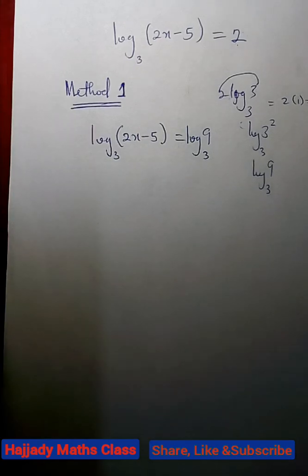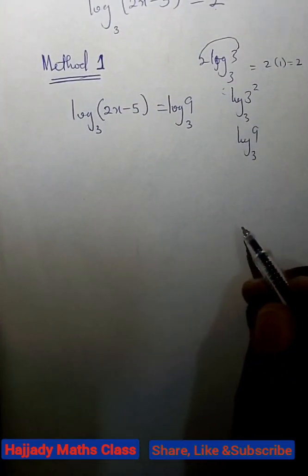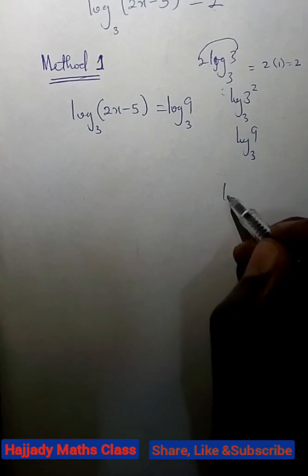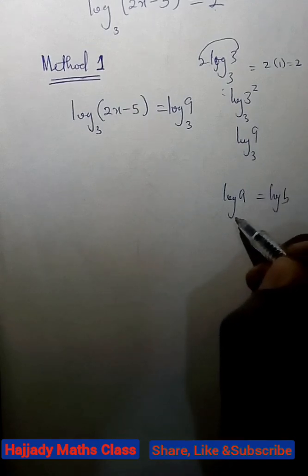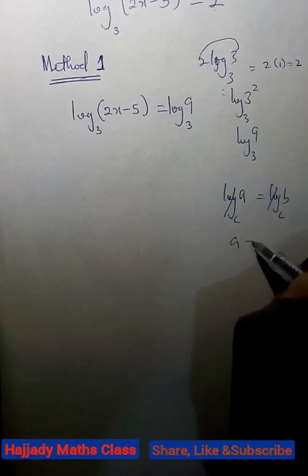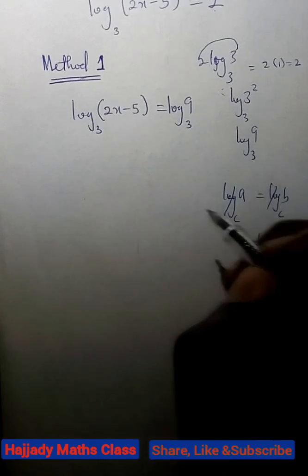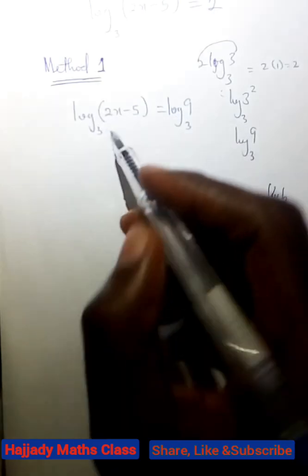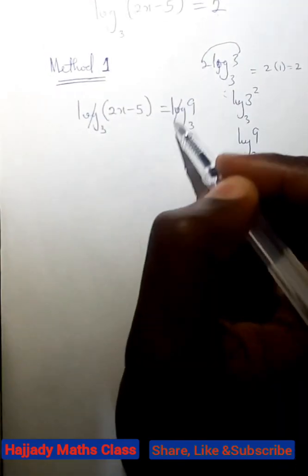Now, in solving this further, from the law of logarithms, it says that when you have log A equals log B, provided they are having the same base, then we can say that A equals B. So, the same thing will be applied. Since they are both in base 3, you can cancel out the log.